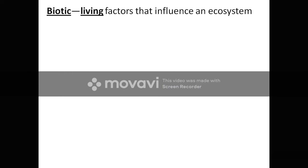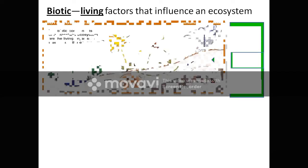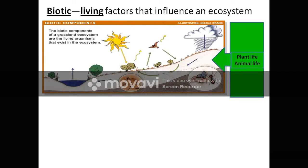Biotic factors are the living factors that influence an ecosystem. In the picture, I have shown you the grassland ecosystem. Here you can see all the plants, whatever animals are present, organisms are present, microorganisms — all they form a biotic component. Whatever is living will be included into biotic components.